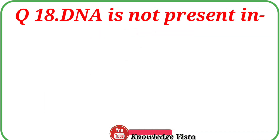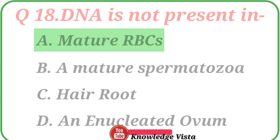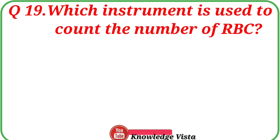Question number 18: DNA is not present in — Option A: Mature RBCs. Option B: A mature spermatozoa. Option C: Hair root. Option D: An enucleated ovum. The correct answer is option A, Mature RBCs.